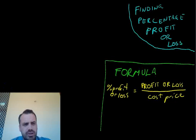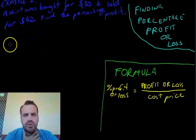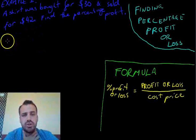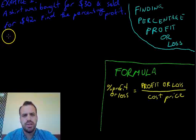Let's take a look at a question. It becomes pretty straightforward when you actually see the question. Here's example number one. A shirt was bought for $30 and sold for $42. Find the percentage profit.